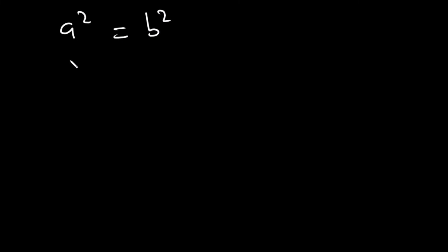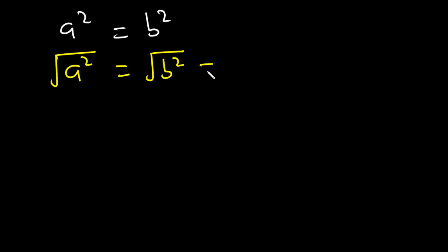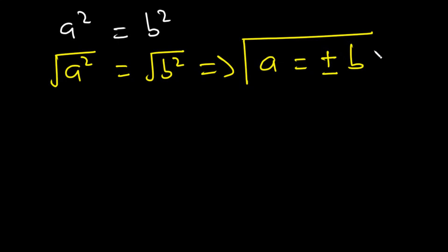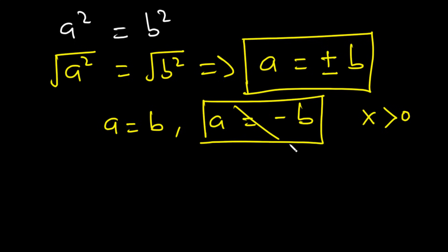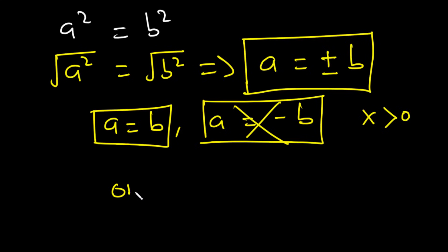Introducing square roots: √(A²) = √(B²), so A = ±B. This gives A = B or A = −B. However, because x > 0, we are dealing only with positive numbers, so we discard A = −B. Therefore A = B, and the function is one-to-one.